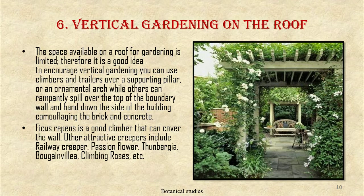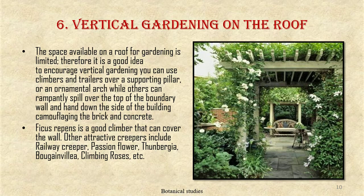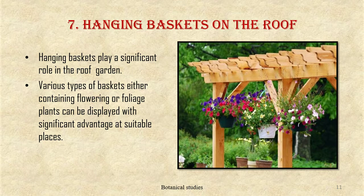Sixth, vertical gardening on the roof — the space available on a roof is limited, so it is a good idea to encourage vertical gardening. You can use climbers and trailers over supporting pillars or an ornamental arch, or let them spill over the top of the boundary wall and hang down the sides of the building, camouflaging the bricks and concrete. Ficus repens is a good climber that can cover the wall; other attractive creepers include railway creeper, passion flower, Thunbergia, bougainvillea, and climbing roses.